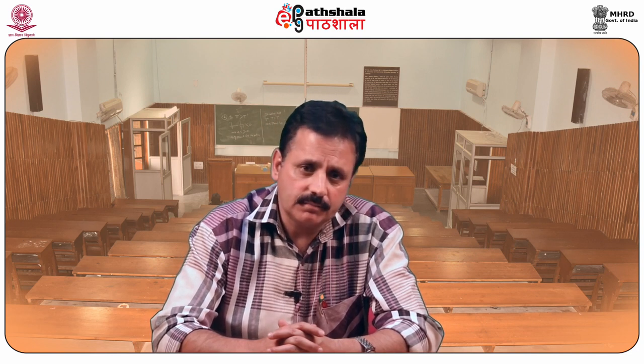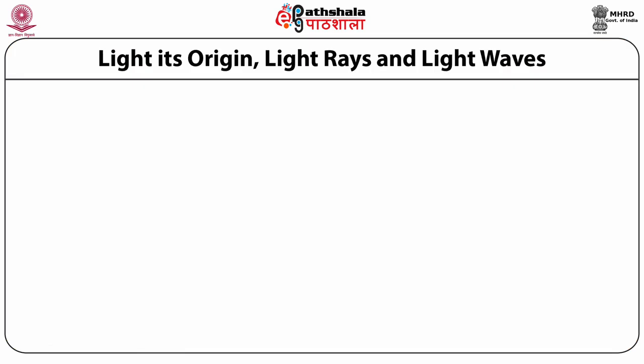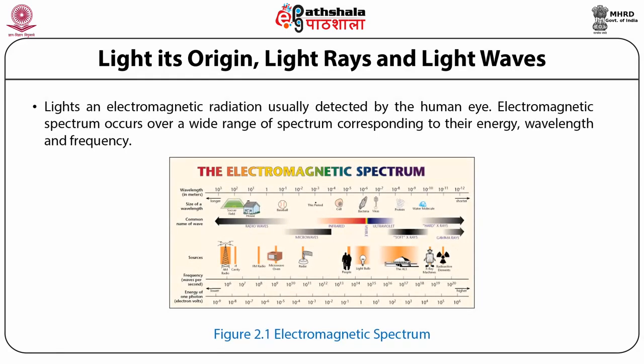Detection of light coming from various objects in the universe is very important for understanding the universe around us. As light emits from any celestial object, it interacts with components of matter present there, and as a result, the originality of the incident radiation changes. By using the physics of the interaction of radiation with matter, the properties of matter can be described. Here we discuss light, its origin, light rays, and light waves.